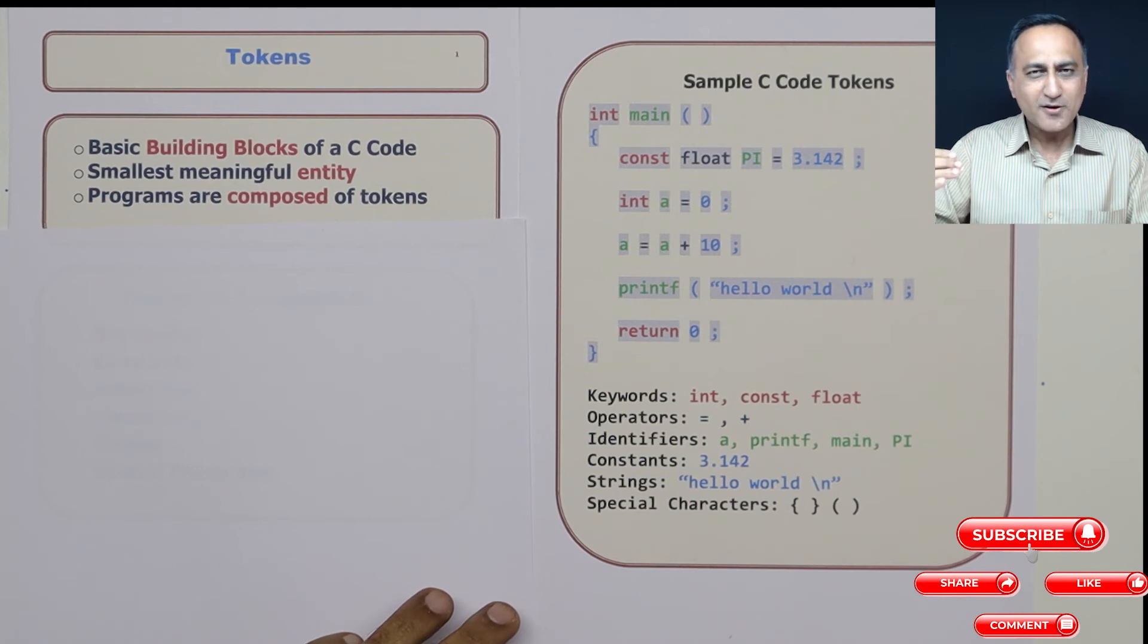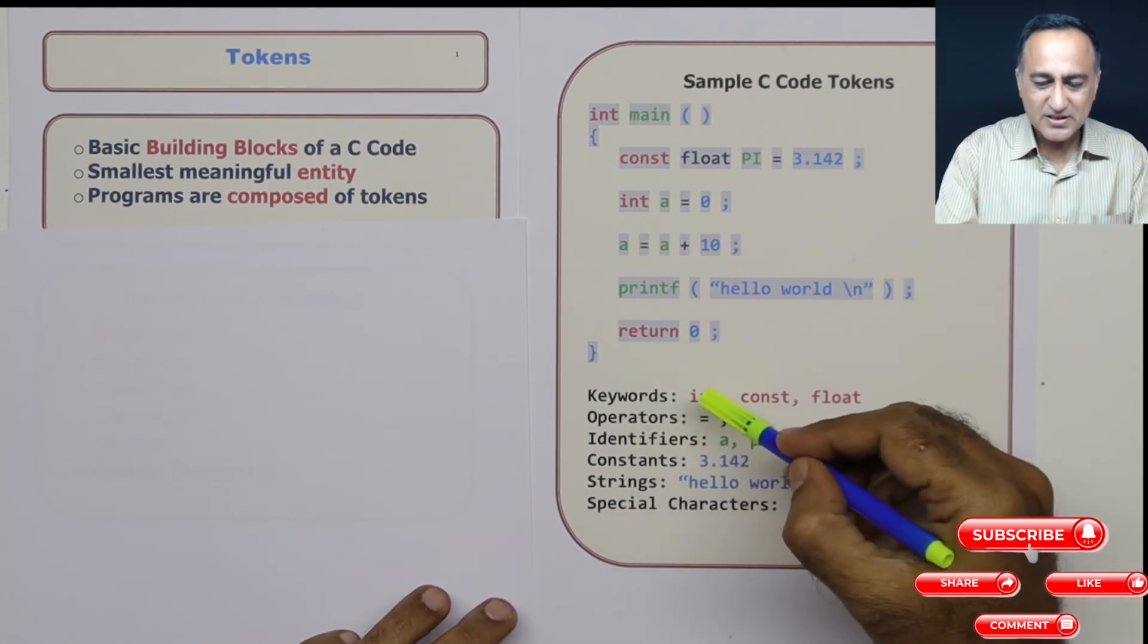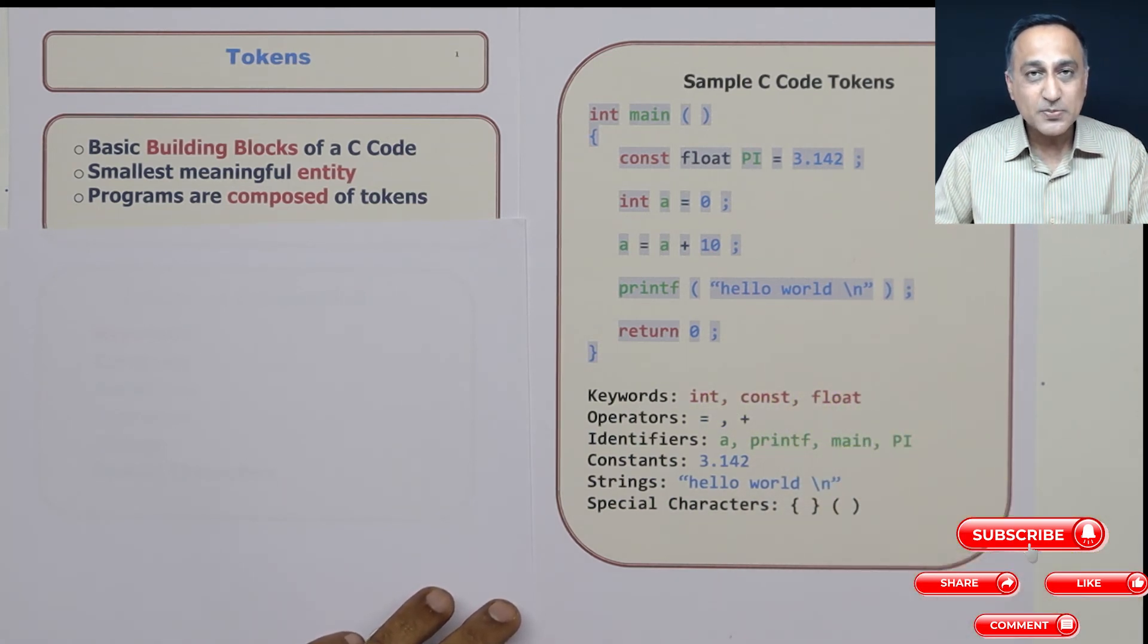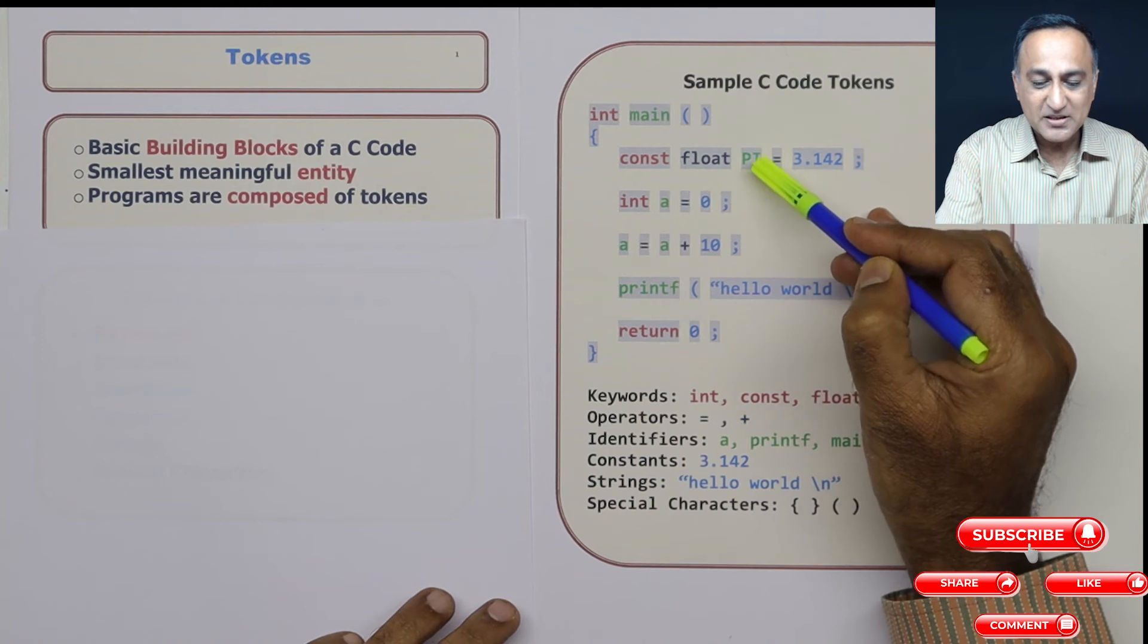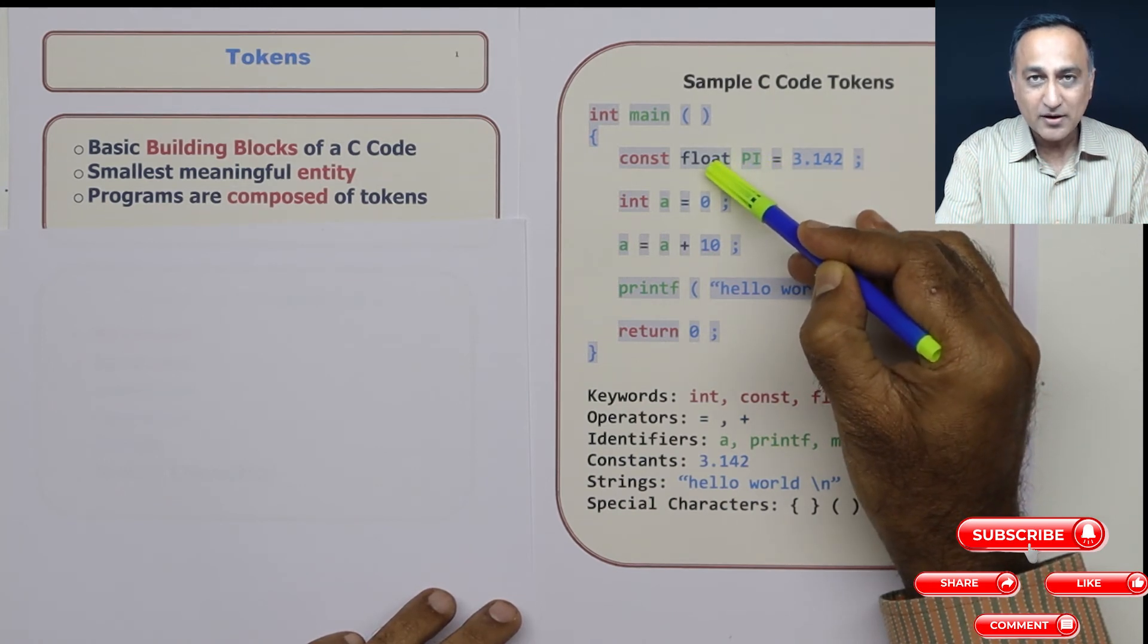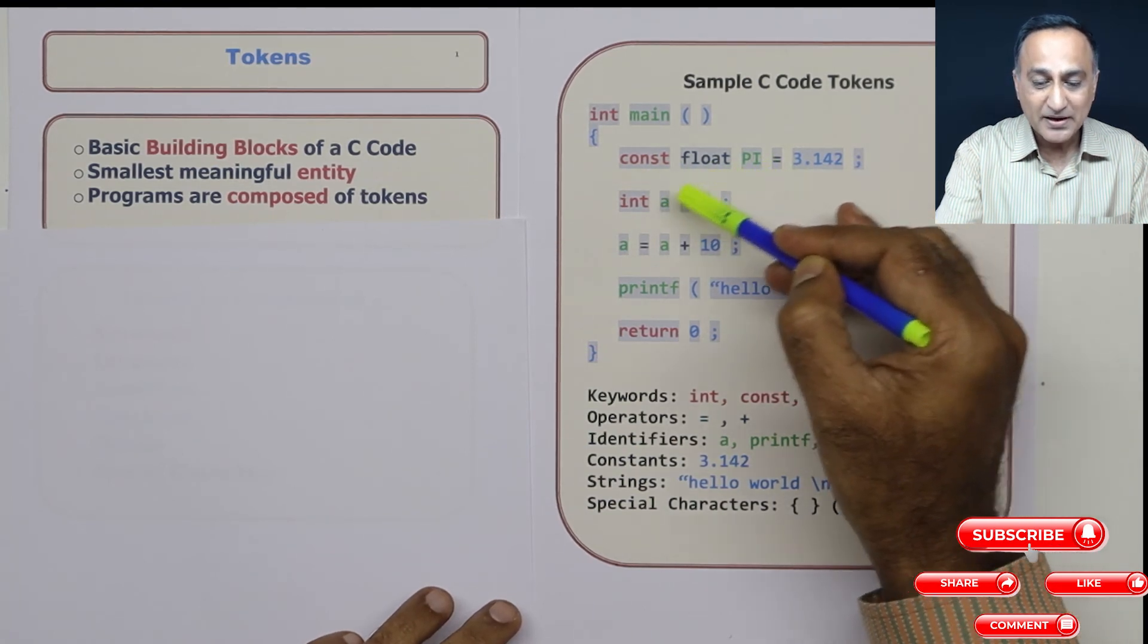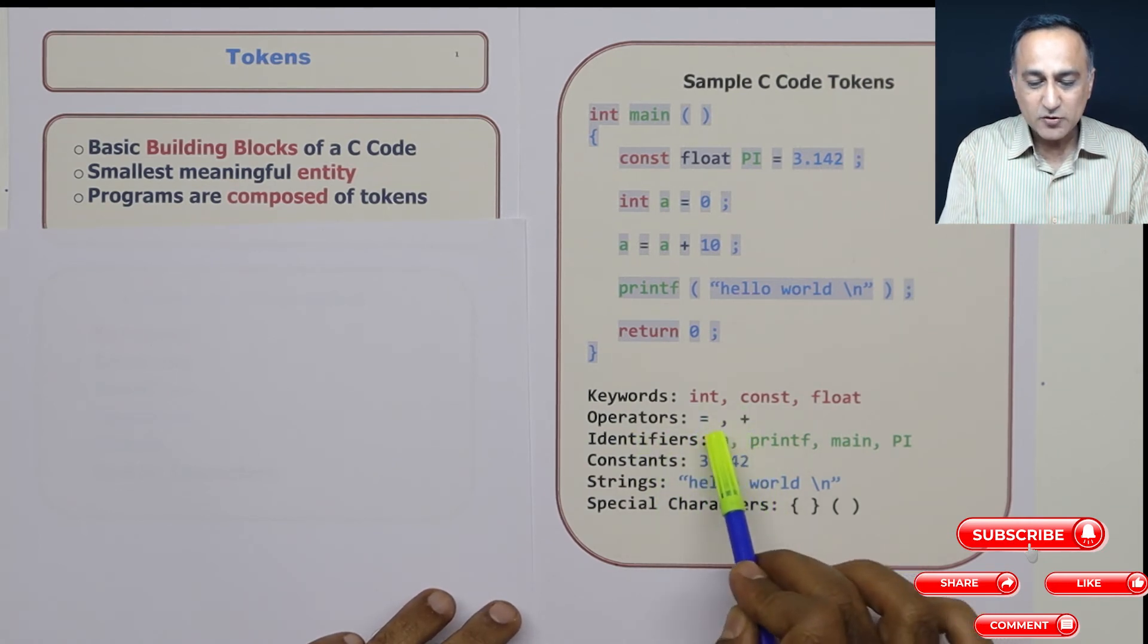If you just glance at a program, it's going to consist of keywords like int, const, float. Keywords are words that have specific or special meaning to a C compiler. For example, when I say const float pi, that means pi is a real number of the type floating or real type, and it's a constant, which means you cannot change the value of pi in your program.